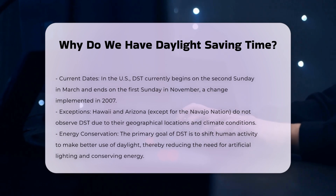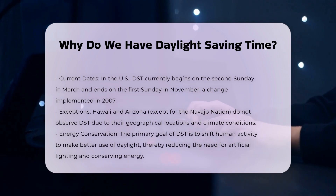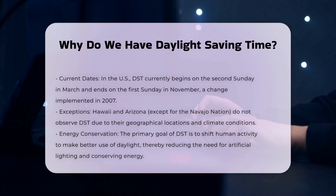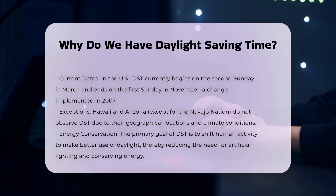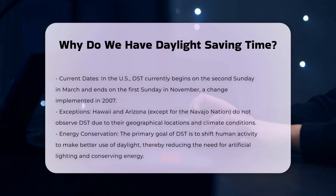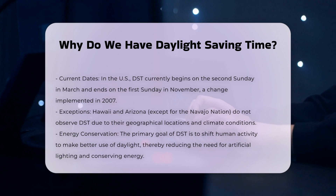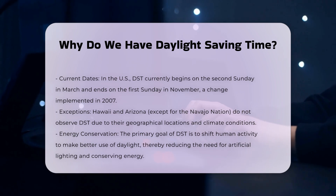The start and end dates of DST have varied over the years. In the United States, DST currently begins on the second Sunday in March and ends on the first Sunday in November. This change was implemented in 2007 to extend the duration of DST.